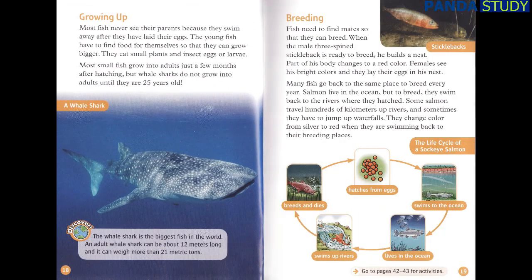Growing up. Most fish never see their parents because they swim away after they have laid their eggs. The young fish have to find food for themselves so that they can grow bigger. They eat small plants and insect eggs or larvae. Most small fish grow into adults just a few months after hatching, but whale sharks do not grow into adults until they are 25 years old.